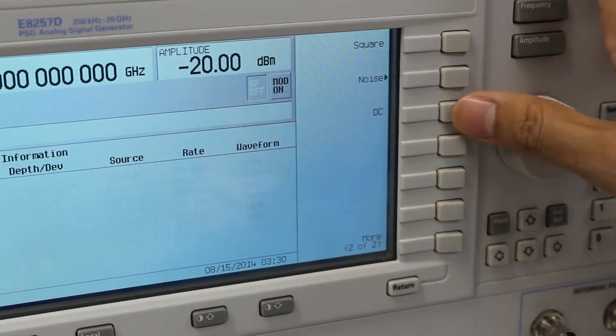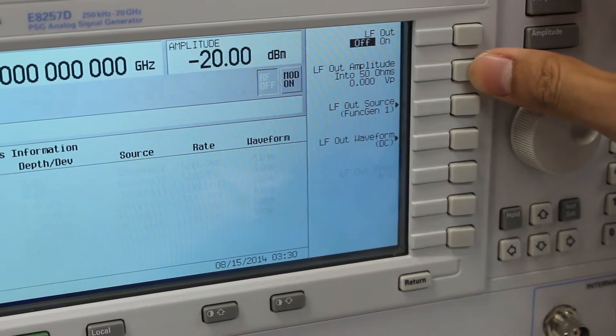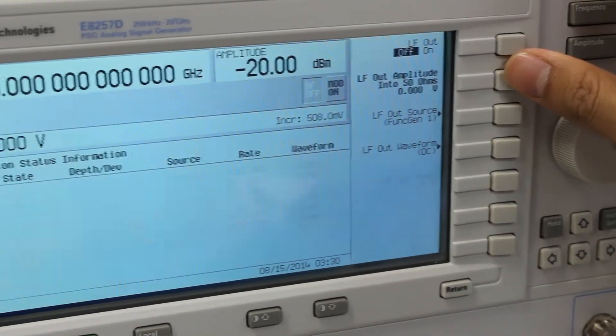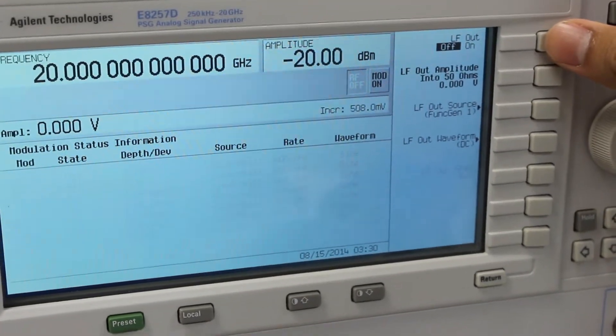Select More button for additional options, then select DC. Make sure LF Amplitude function is activated to reflect voltage measurement. LF Out button should be in the On status.